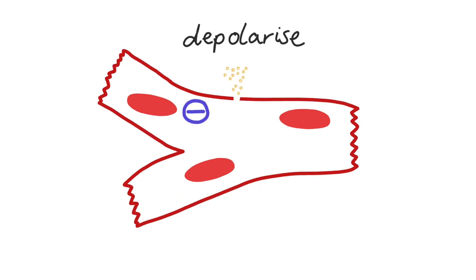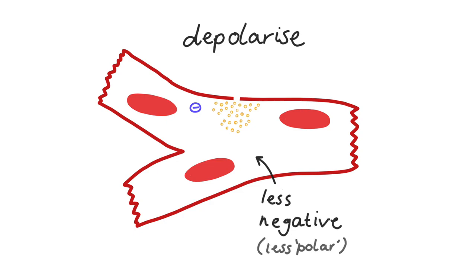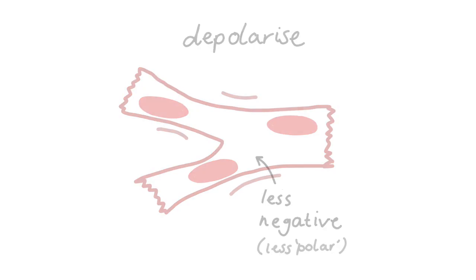For a heart muscle cell to contract, it has to depolarise. That is, the ion balance on either side of its cell membrane has to change suddenly and in such a way that the inside of the cell becomes less negatively charged. In a heart muscle cell, this causes contraction, i.e. a heartbeat.